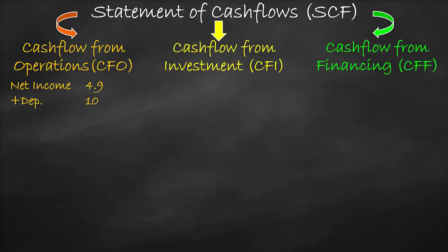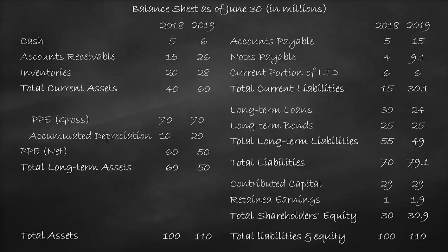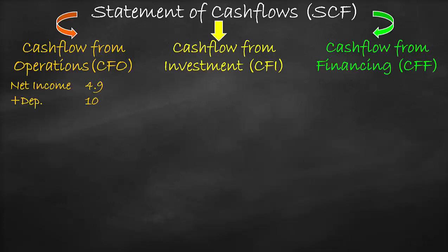Then we subtract operating assets and add operating liabilities. From the balance sheet, accounts receivable and inventory are operating current assets, while accounts payable is an operating current liability. Our next item is a negative change in accounts receivable — we use the negative sign because there is a negative relationship between the change in assets and change in cash. Negative (26 minus 15) equals negative $11 million.